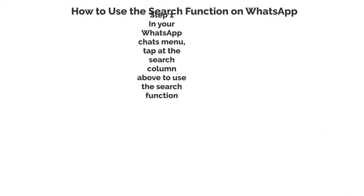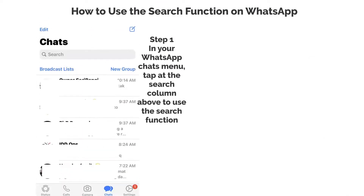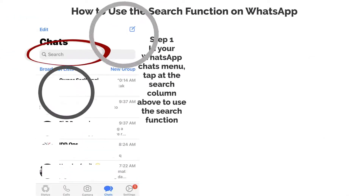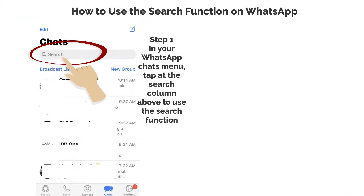Step 1. In your WhatsApp chats menu, tap at the search column above to use the search function.